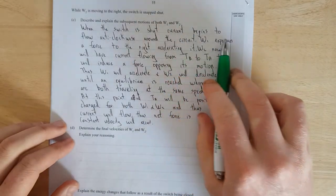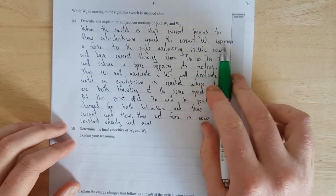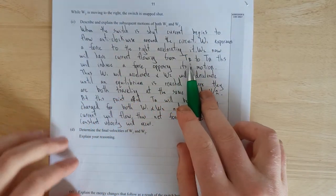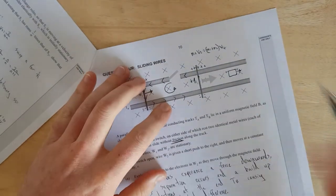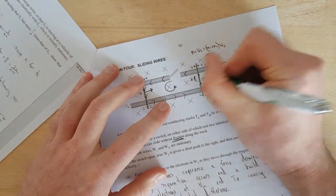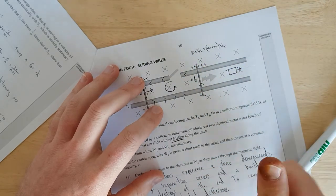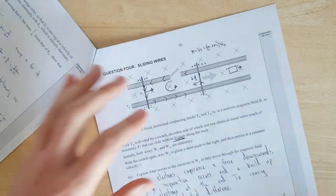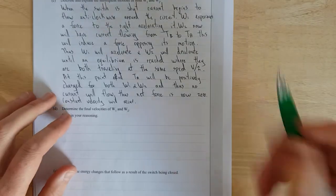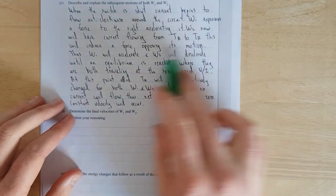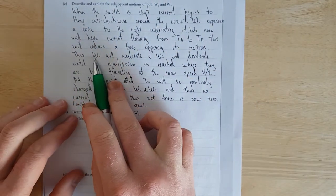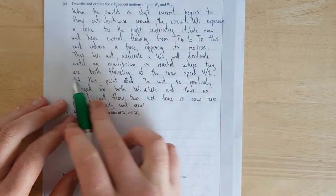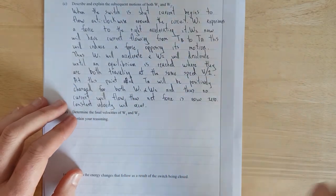Right, so I said, when the switch is shut, current begins to flow anticlockwise around the circuit. Wire one experiences a force to the right, accelerating it. Wire two now will have a current flowing from B to A, or from TB to TA. So wire two will have the current going up that direction, which means it's going to experience a force backwards. So it's going to experience a force to the left, which will slow it down. Right, and I said, this will induce a force opposing its motion, full stop. Thus, wire one will accelerate and wire two will decelerate until an equilibrium is reached where they both are travelling at the same speed, V over two. We showed that over the page.